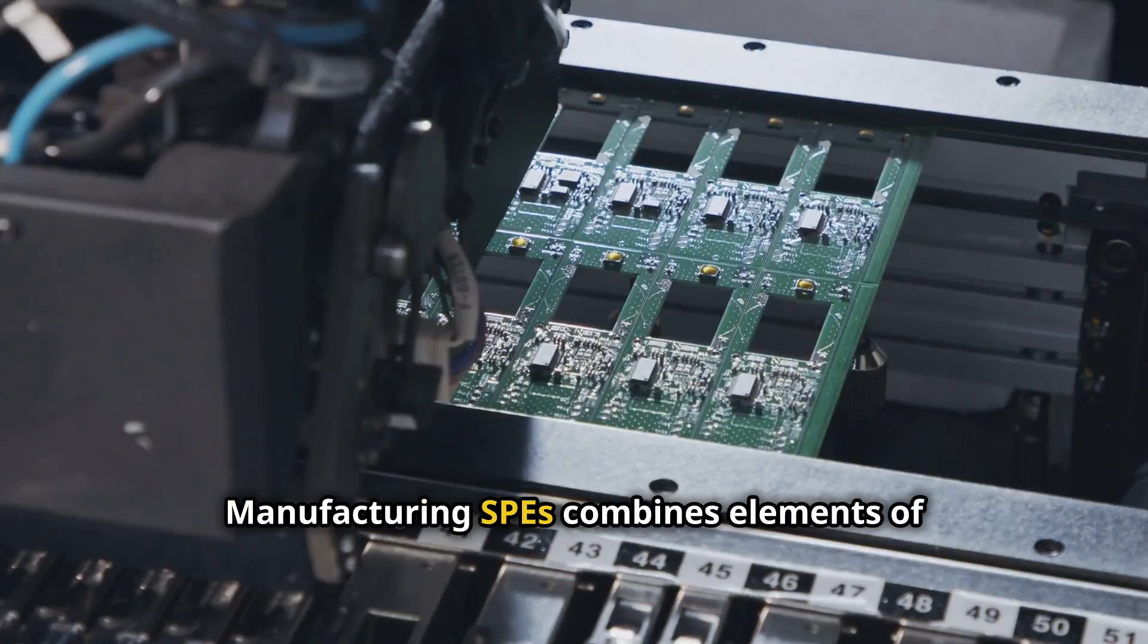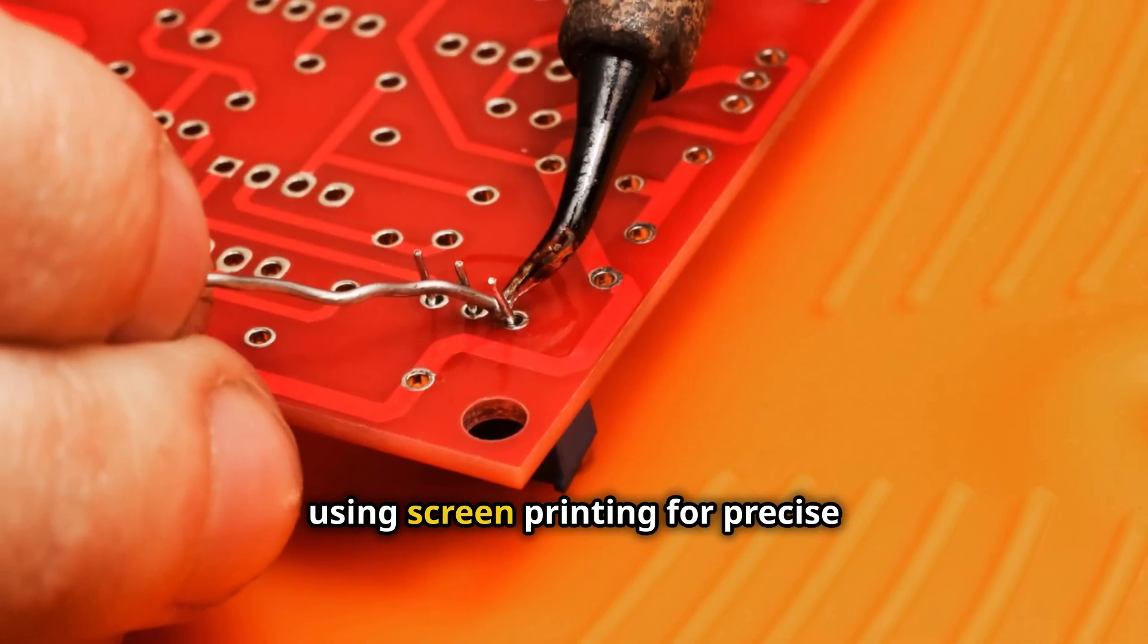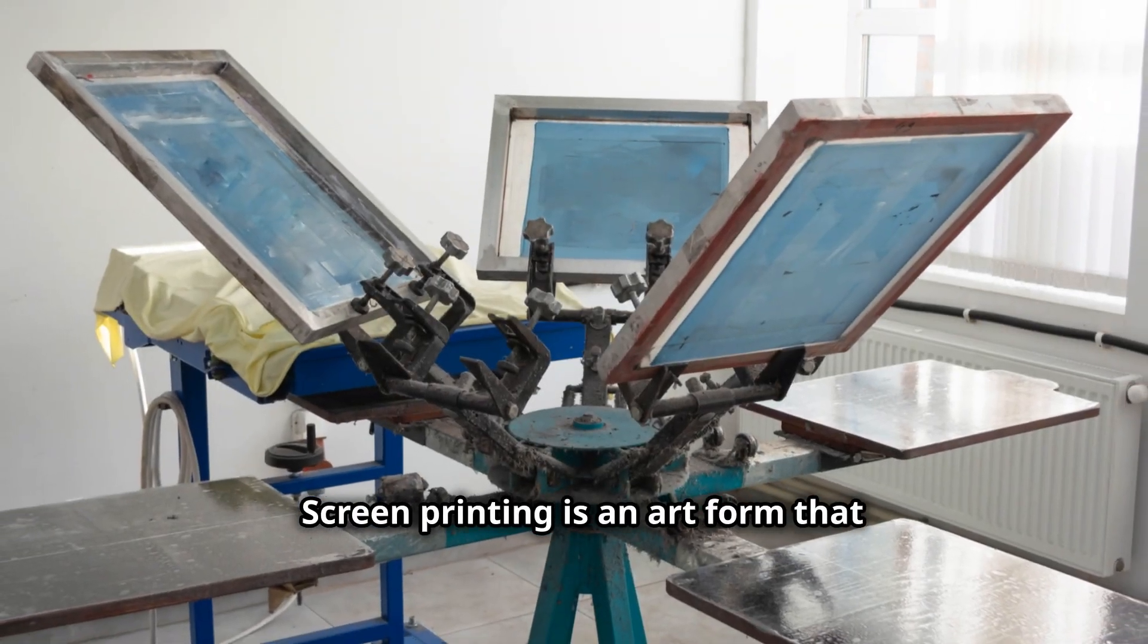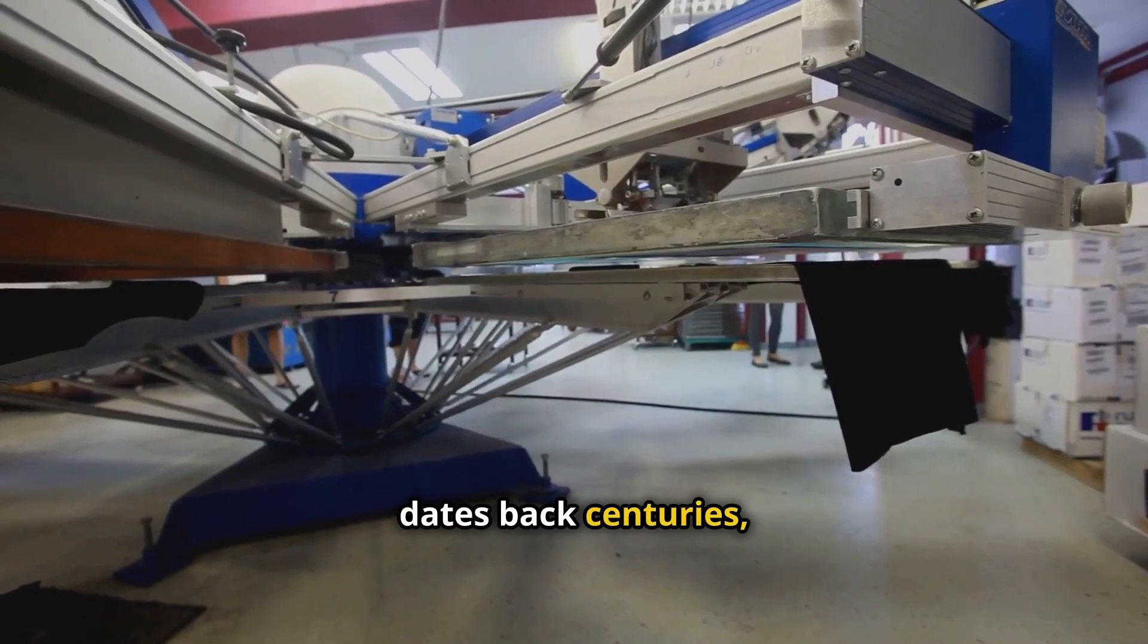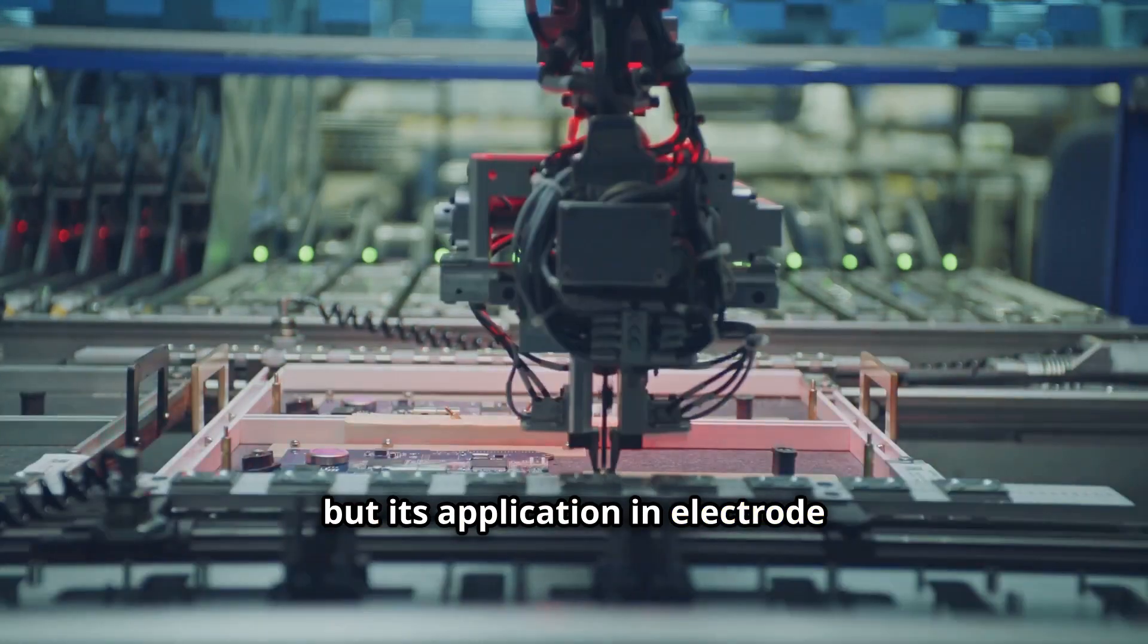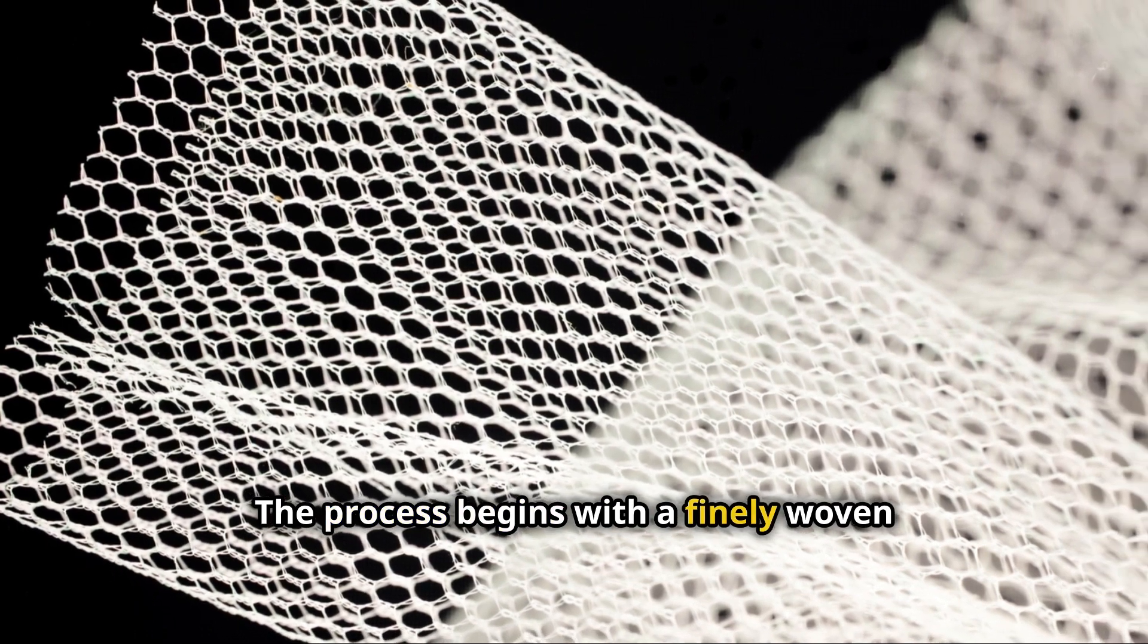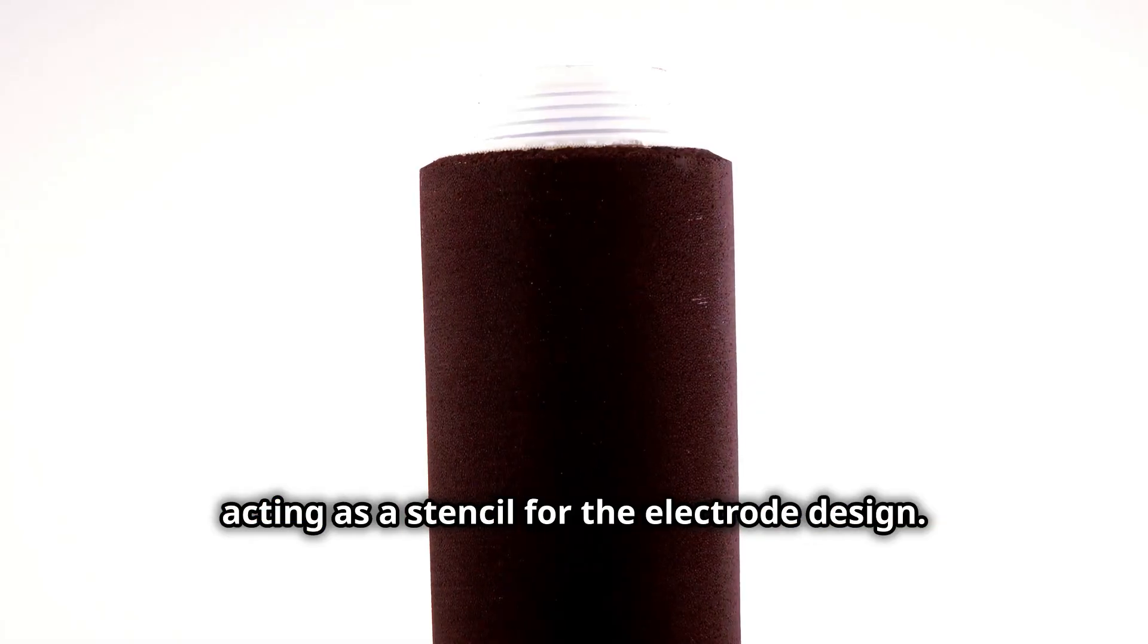Manufacturing SPEs combines elements of printing and electronics manufacturing, using screen printing for precise deposition of electrode materials. Screen printing is an art form that dates back centuries, but its application in electrode manufacturing is relatively new. The process begins with a finely woven mesh, stretched over a frame, acting as a stencil for the electrode design.